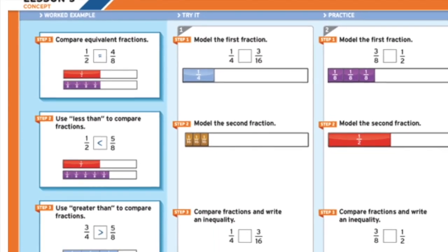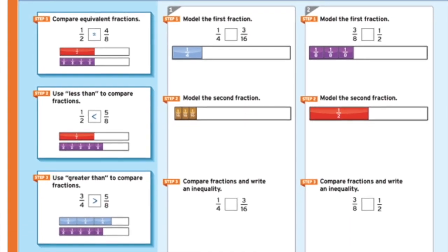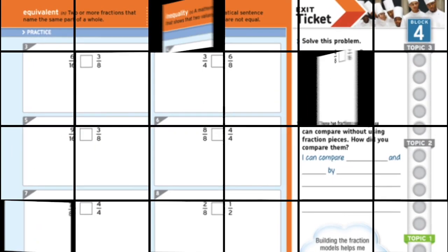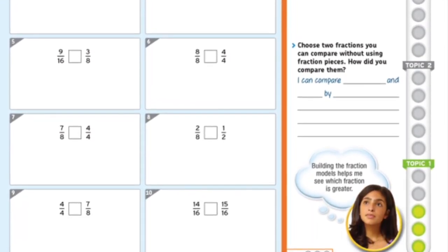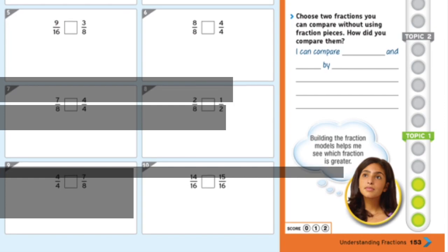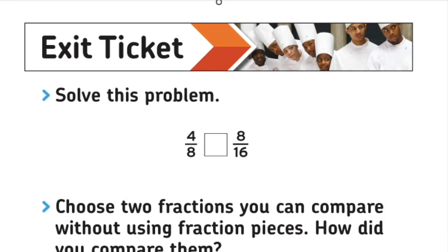So we've done the example in number 1. You have numbers 2 through 10 to practice on your own. Remember you can use the model or you can use your equivalents. And don't forget that exit ticket at the end.